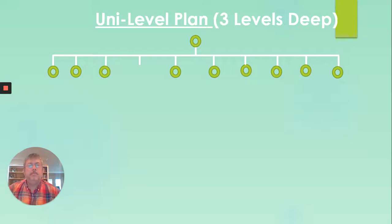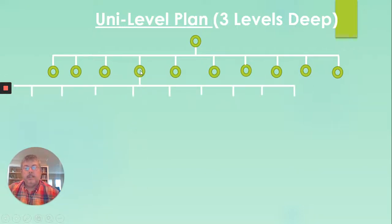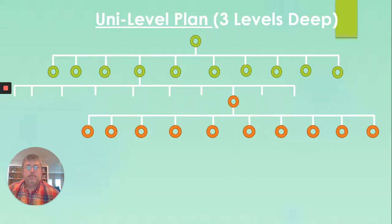So this is the unilevel plan. In this example, it is three levels deep. And so this person at the top is you. I guess I have a mouse right here. So this is you and you've sponsored all these people. You sponsor another one and none of them have really done anything. And then this person starts to build a business. So he starts to put people in, that person puts a bunch of people in.